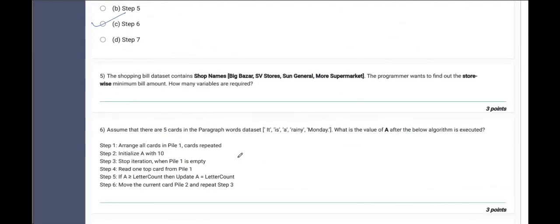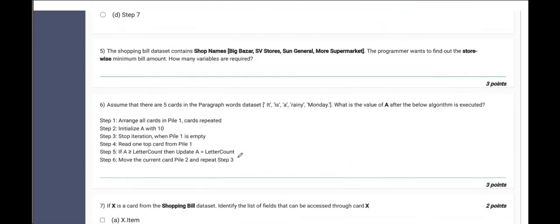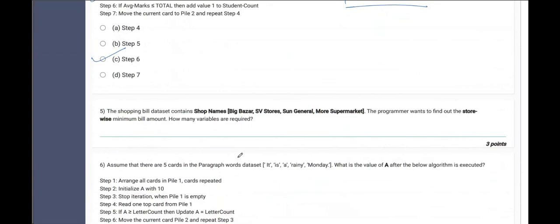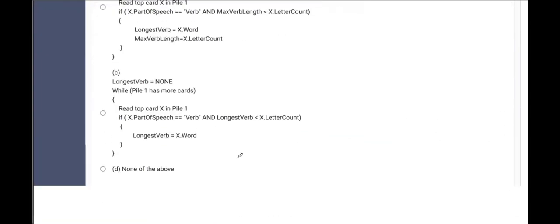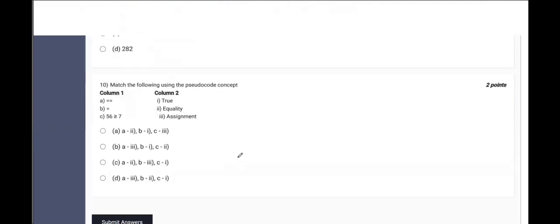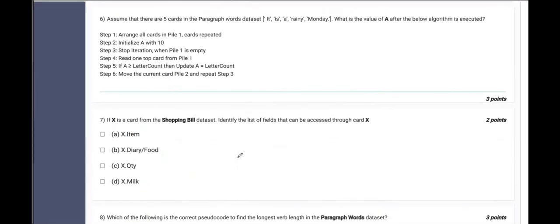The shopping bills dataset contains shop names: Big Bazaar, SV Store, Sun General Supermarket. OK. So we will discuss the rest of the questions in part 2, which will be provided to the ones who are subscribed.